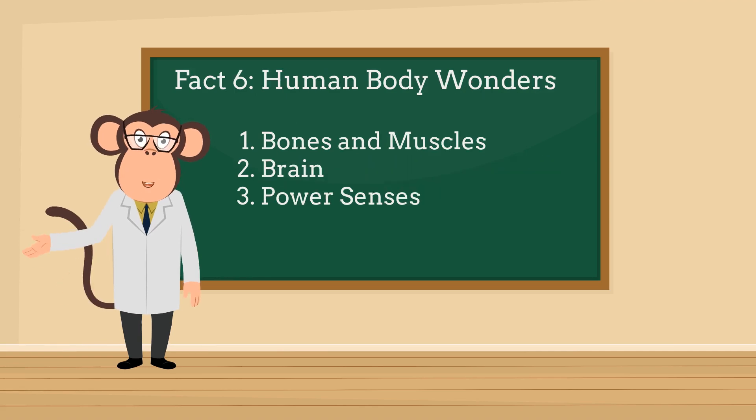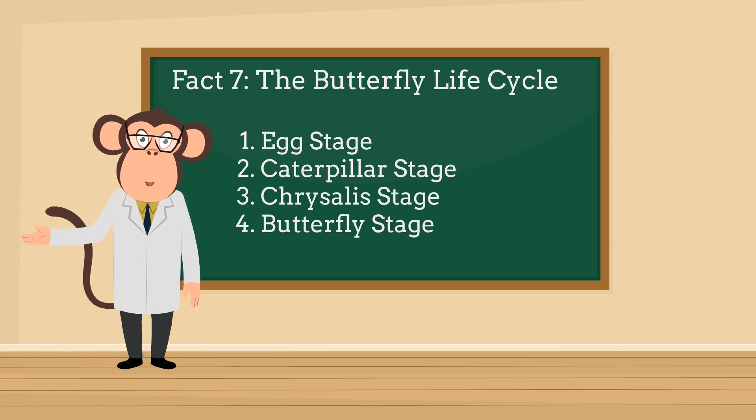Fact 6: Human body wonders. Our bodies are incredible machines with super cool features. Bones and muscles: They work together, helping us move and stay strong. Brain power: The brain is our control center, responsible for thinking, feeling, and learning. Senses: Eyes, ears, nose, tongue, and skin help us experience the world in amazing ways.